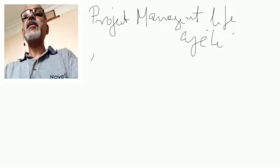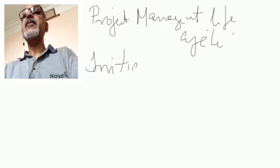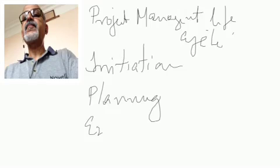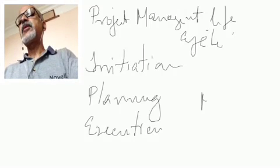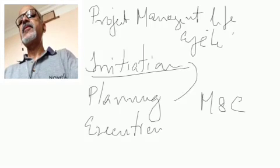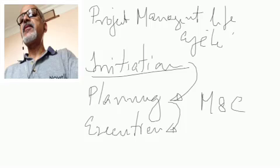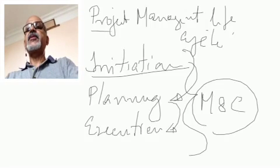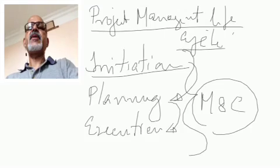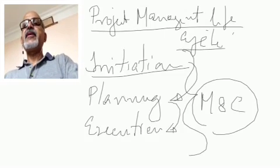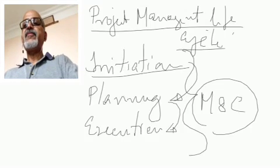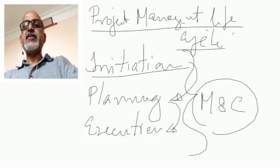The project management lifecycle consists of: first, Initiation; then Planning; then Execution; and Monitoring and Controlling happening throughout all these phases; and finally Closing. The moment we mention project management lifecycle, it is initiation, planning, execution, monitoring and controlling, and closing.